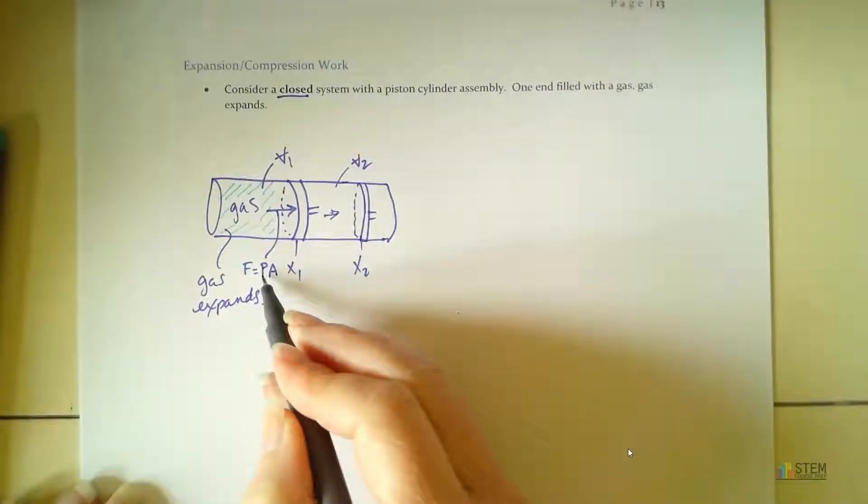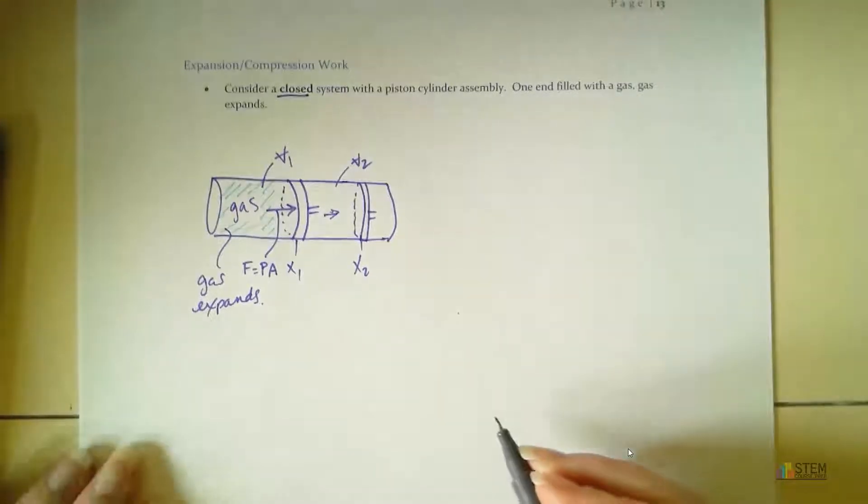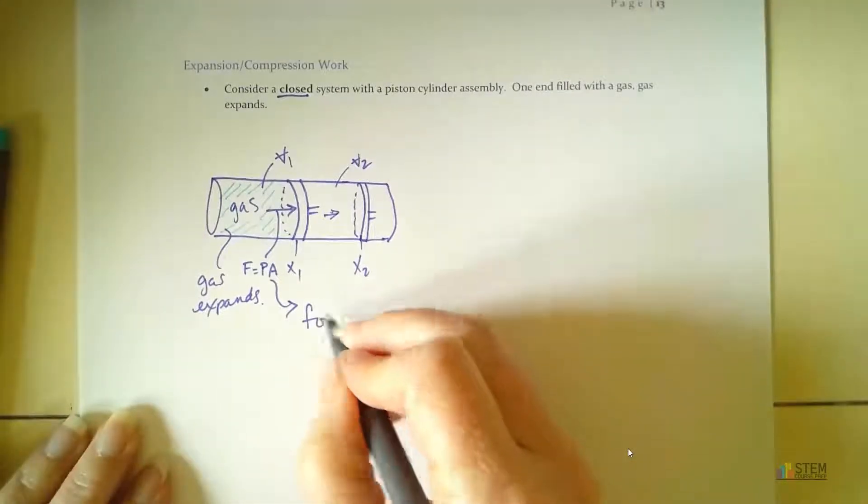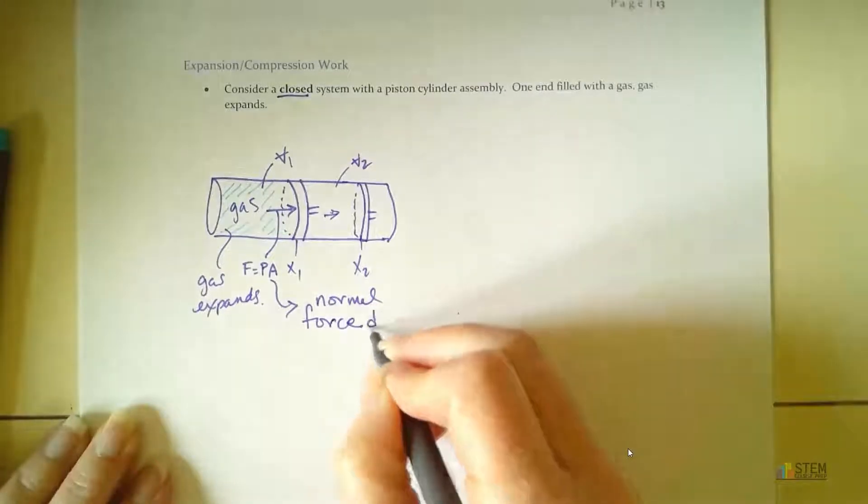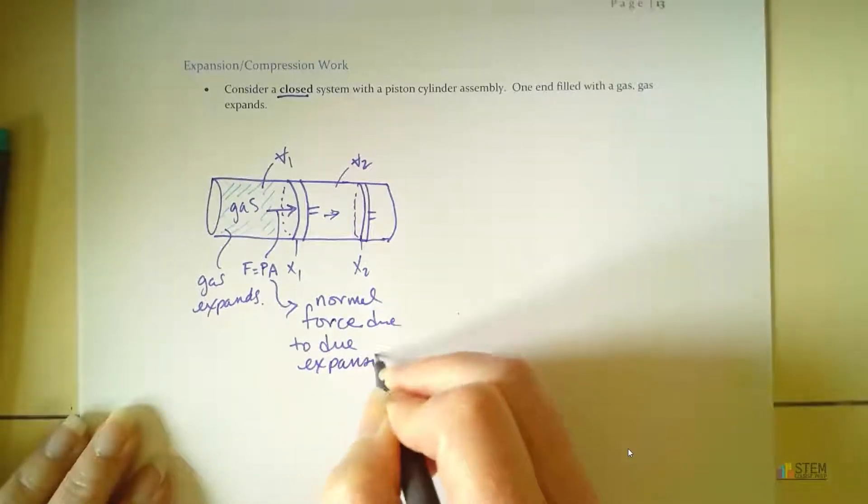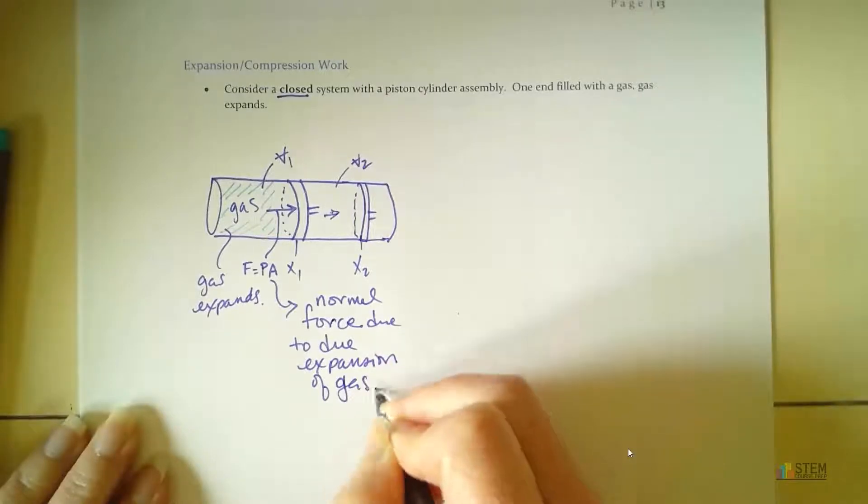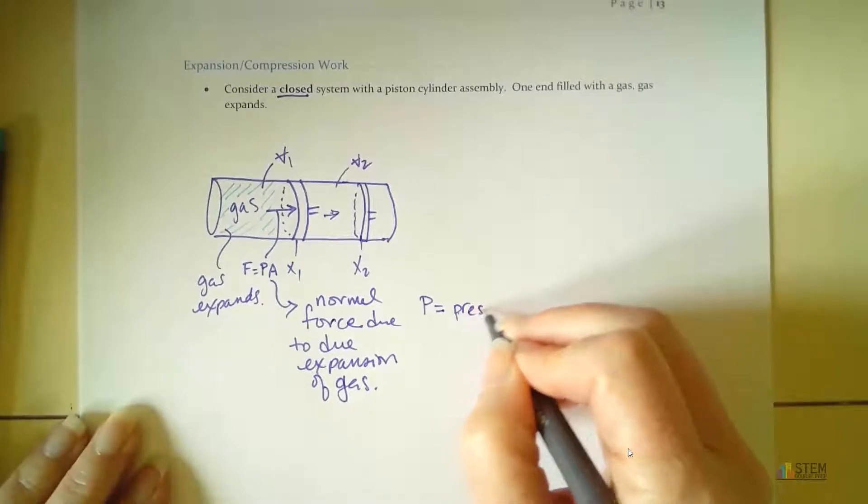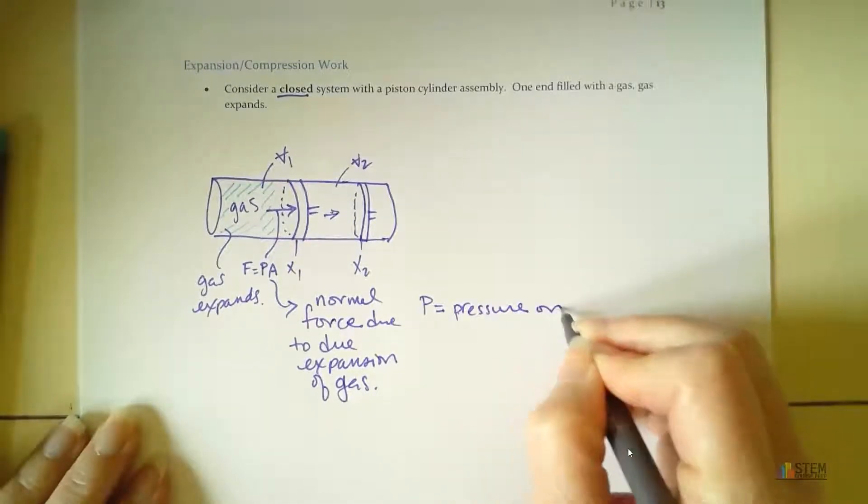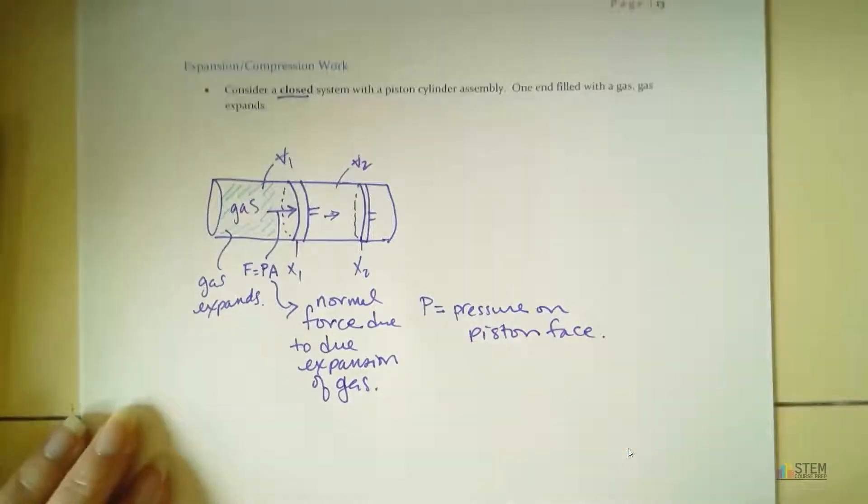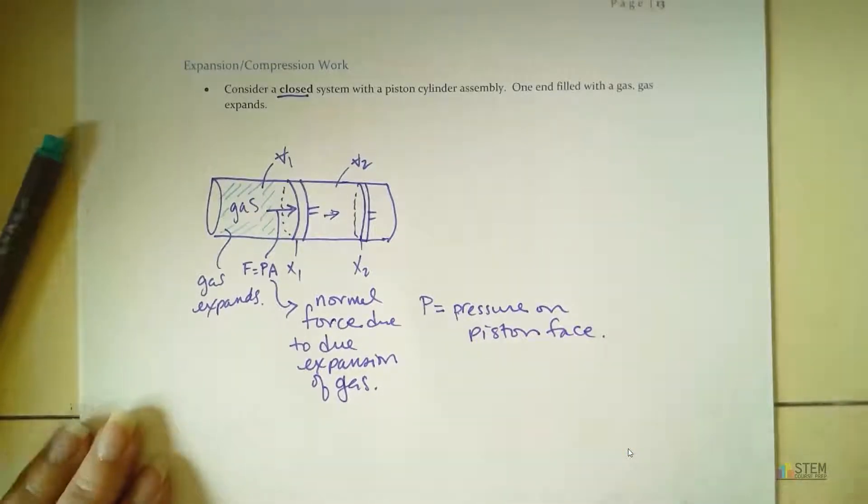And this force was caused by the pressure. All right. And remember, force is pressure times area. So this will be our, it's actually a normal force. Let's put that. So normal force due to expansion of gas. And remember, P is the pressure on the piston face.